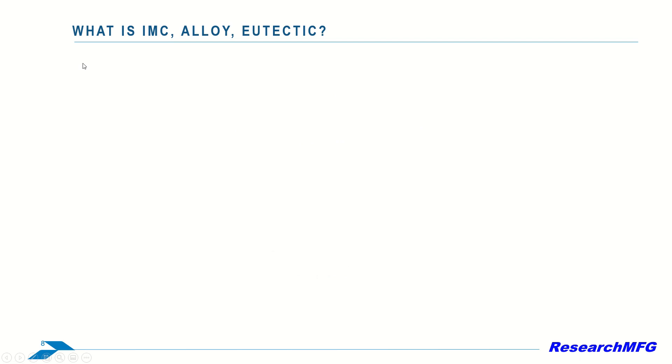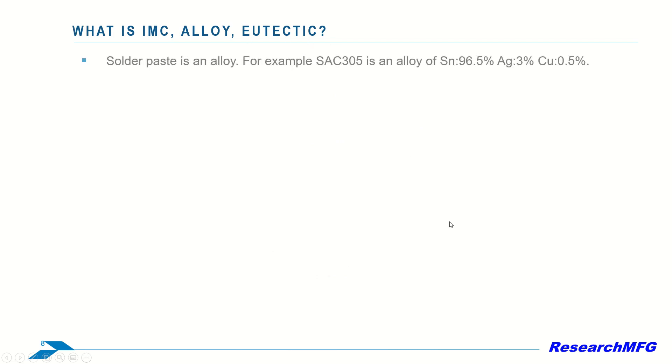So, what is IMC, alloy, and eutectic? What are the differences between them?